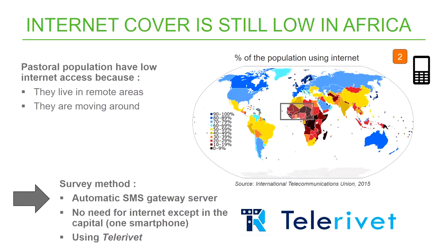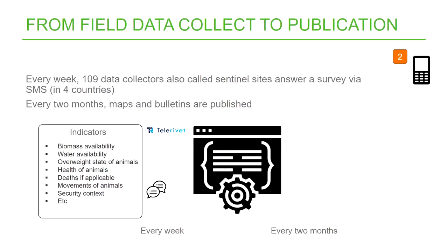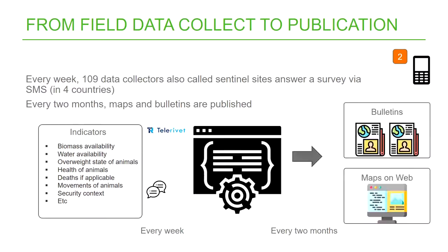Telerivet allows us to do automatic surveys using SMS. Every week, 109 data collectors answer the survey — they send information about biomass availability, water availability, and so on. They just send SMS and we analyze that. Every two months we publish bulletins and maps on the web. This information is used, for example, by WFP and FAO in the region to decide what actions to take.